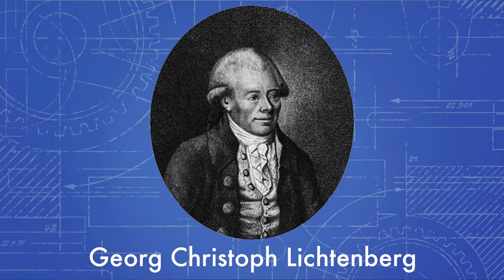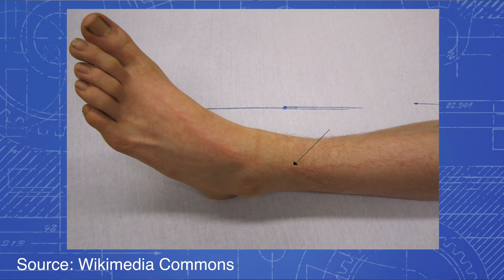With that being said, these patterns are called Lichtenberg figures, after the German scientist who discovered them. They occur as high voltage is discharged over an insulator. In fact, they can even be seen on the skin of lightning strike victims. However, in this video we'll be using wood as our insulator.